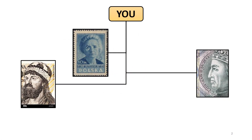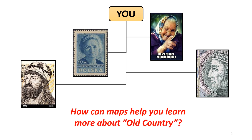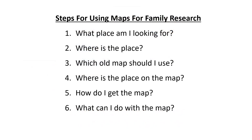As we fill out our family trees we all hope to find a direct link to Mieszko, Jagiełło, or at least Marie Skłodowska, but we also desire to know something about the lives of our ancestors beyond who married whom and what relatives remember about the old country. These videos show you how to use maps to provide information about the lives of your ancestors as well as strengthening the inevitable weak links in your family tree. There will be an emphasis on the value of old maps in learning more about your ancestors.